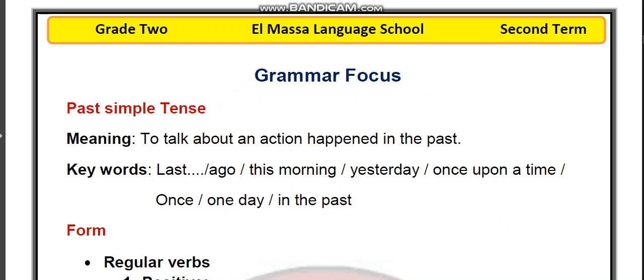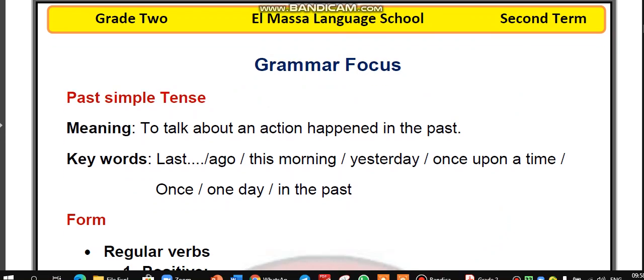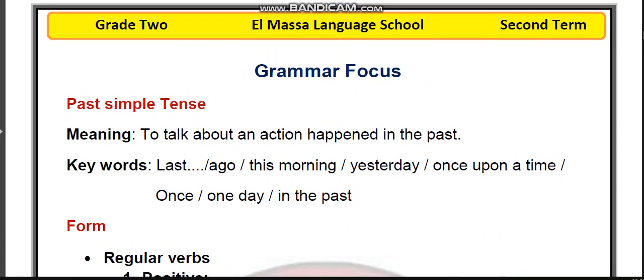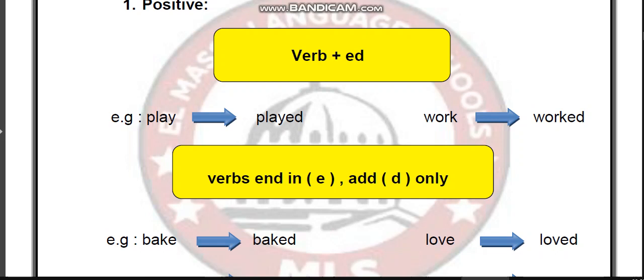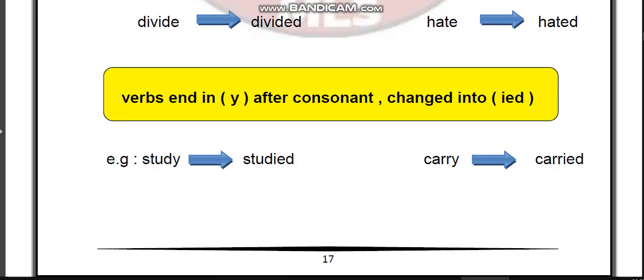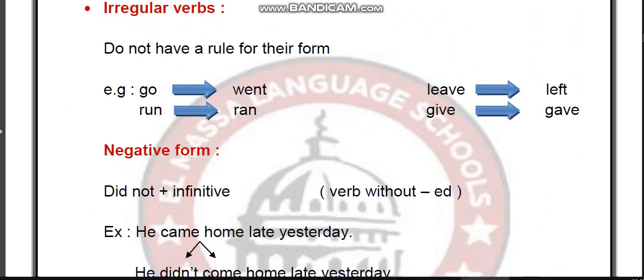For verbs in the Past Simple, you have two forms. Number one is the regular verb. Regular verbs in the positive take the ending -ed. Most verbs: you just add -ed to the end of the verb. If the verb ends in -e, you add -d. If the verb ends in -y after a consonant, you change the -y to -i and add -ed.